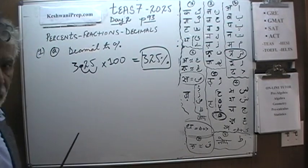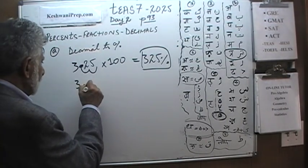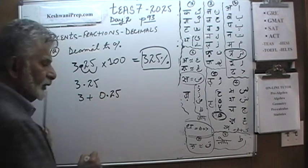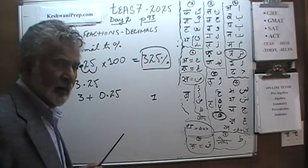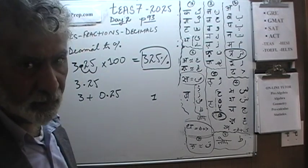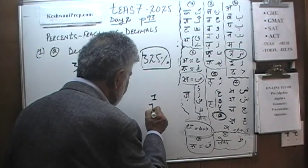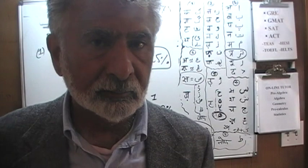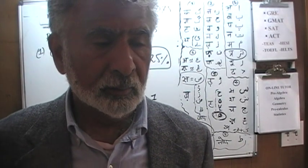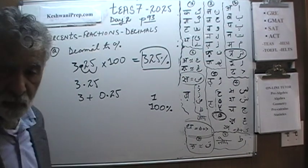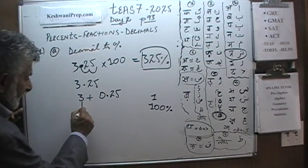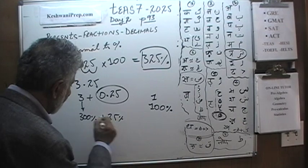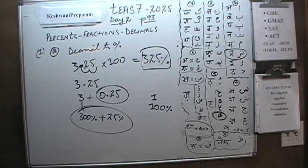Here's another way to look at 3.25. Of course, 3.25 is simply 3 plus 0.25. If you have one whole pizza, that is 100% of the pizza. So three whole pizzas is 300%, and you already know that 0.25 is simply 25%, hence giving us 325%.